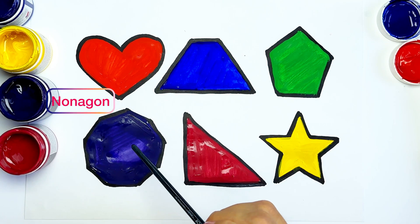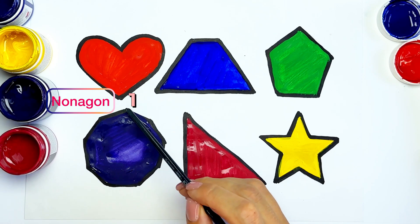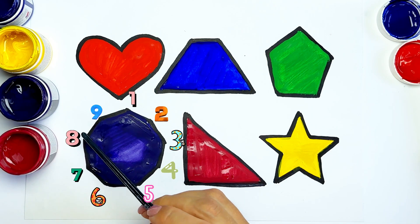Five. Purple nonagon, nine angles. One, two, three, four, five, six, seven, eight, nine.